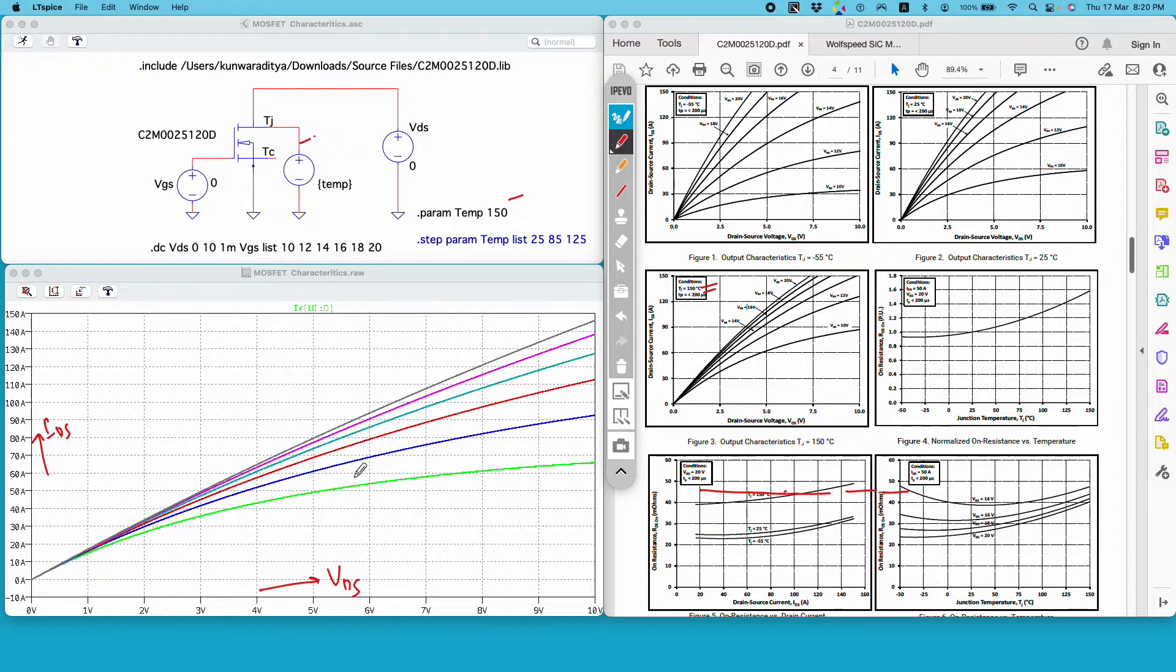I get six curves for this 150 degrees Celsius for six different values of VGS. Now we can also plot the curve for minus 55 degrees Celsius. If you see this upper plot is for minus 55 degrees Celsius.